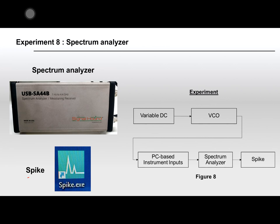In the last experiment, you will learn how to use the Spectrum Analyzers. The Spectrum Analyzers is equipment that allows you to display the spectrum of your signal in the frequency domain. In the experiment, use the signal from the VCO in experiment 7 and pass it to the Spectrum Analyzers. Then use the Spike program on the computer.